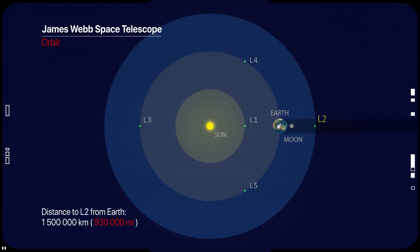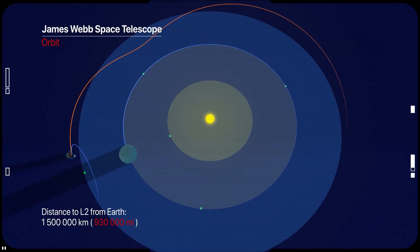James Webb Telescope will orbit the Sun, one and a half million kilometers away from Earth, at what is called the second Lagrange point, L2.